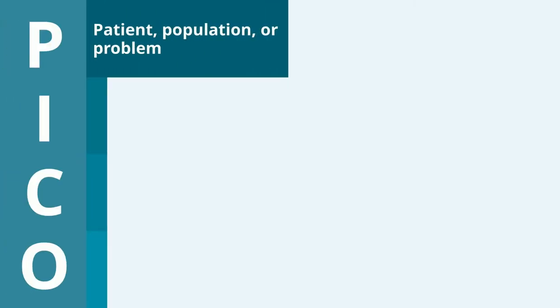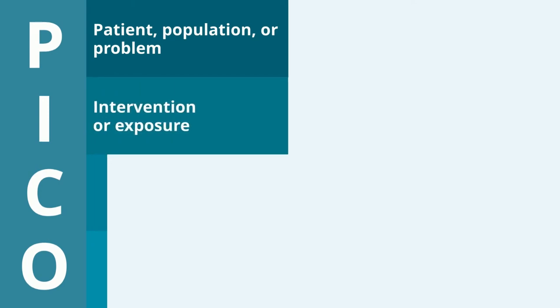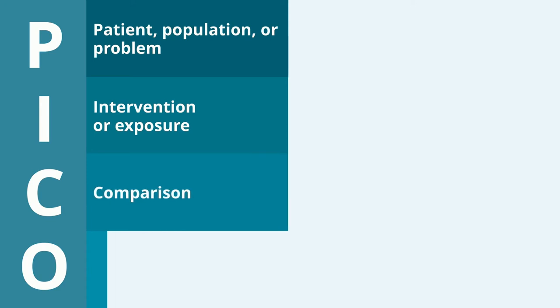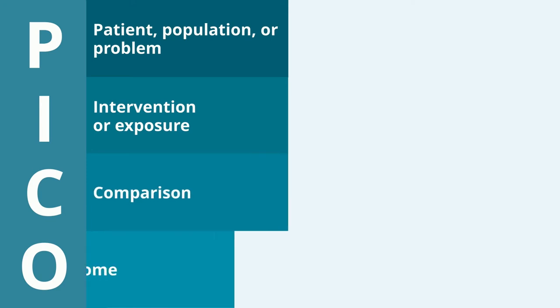How to use PICO? PICO stands for P — Patient, Population, or Problem; I — Intervention or Exposure; C — Comparison; and O — Outcome. To use PICO, answer questions about each of these elements.